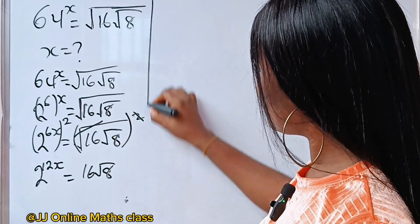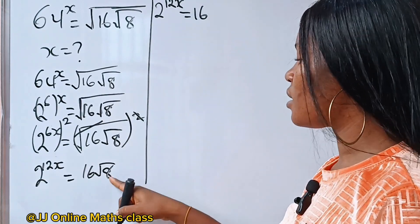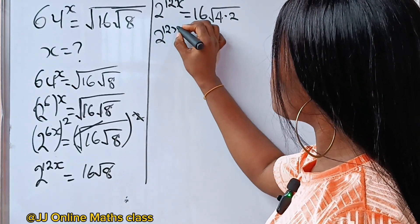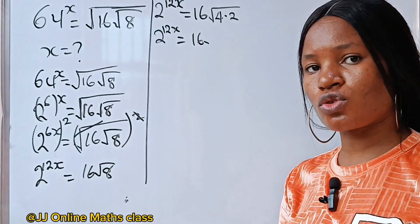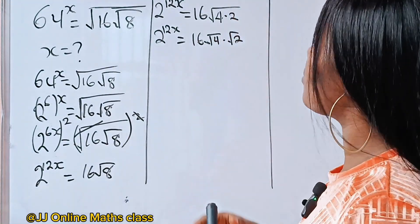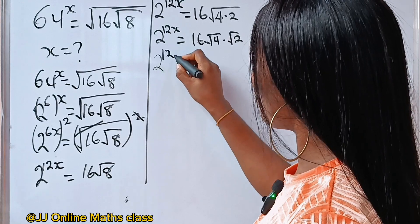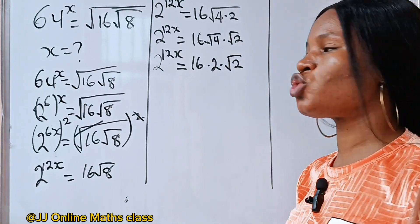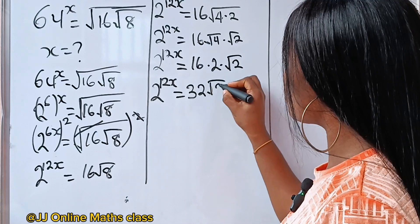This is 2 to the power of 12x, equal to 16. Now root 8 can be expressed as square root of 4 times 2. So we have 2 to the power of 12x is equal to 16, and this is the same thing as root 4 times root 2. So we now have 16 times root 4 is 2, times root 2. That gives us 32 root 2.